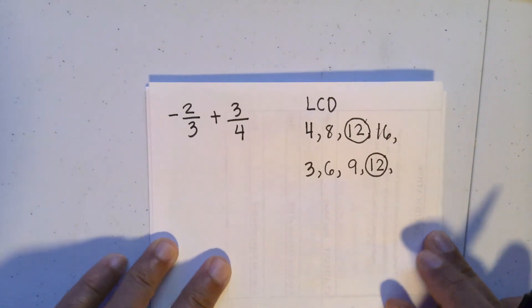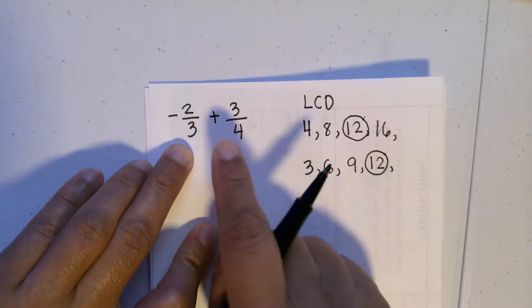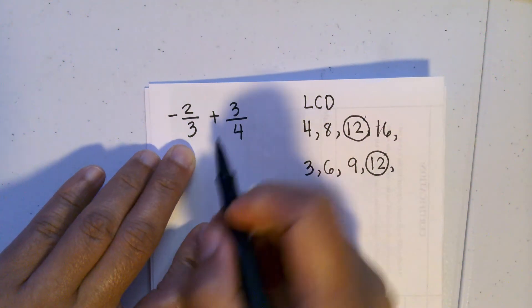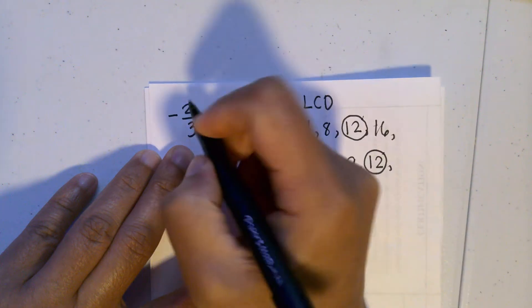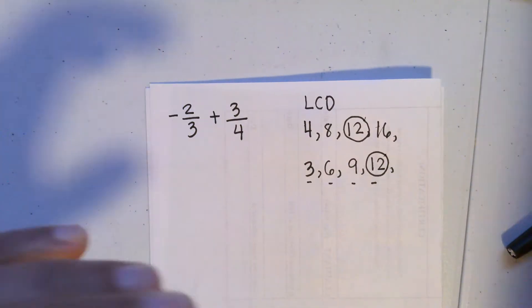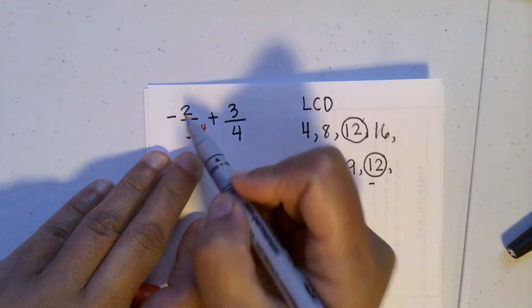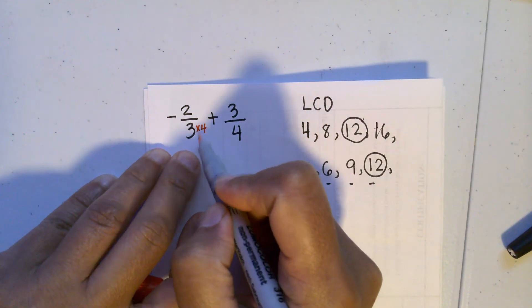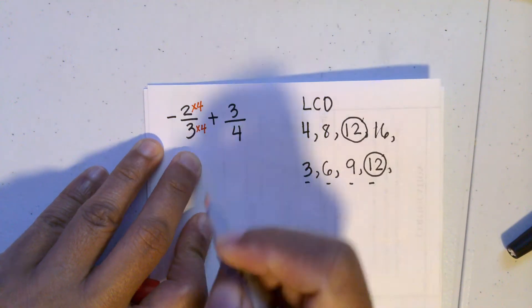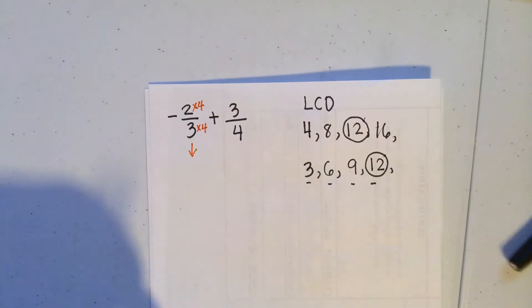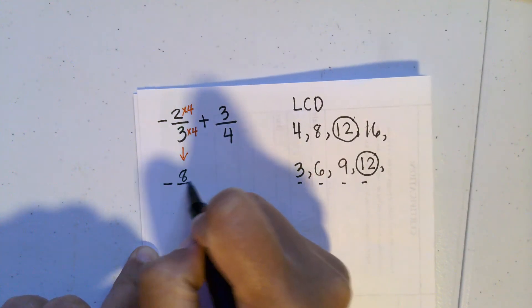So we are going to change the denominators into twelve. For the fraction with denominator three, we multiply three by four to get twelve — you have to count by three four times to get there. Since this is a fraction, whatever you do to the denominator you must do to the numerator, so we also multiply two by four. As a result, we get negative eight over twelve.